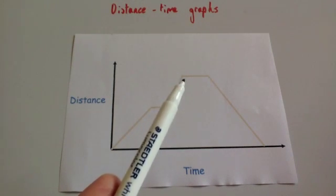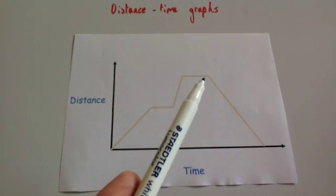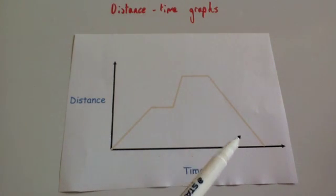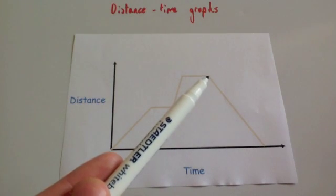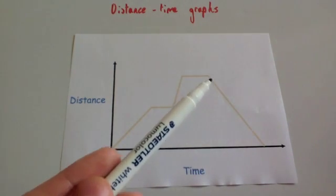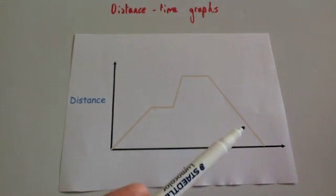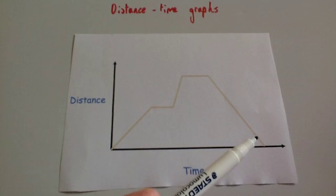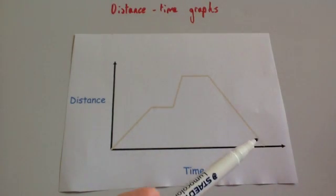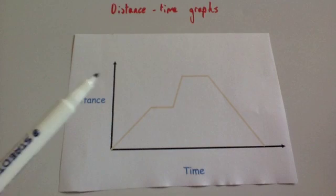Then it goes horizontal again, meaning it's stationary, and then it starts going back down. That means as time is increasing, the distance from the starting point is decreasing — it's turned around and is heading back towards the starting point. Whenever it reaches the horizontal axis, that means it's reached the starting point, so it's gone back to where it began.